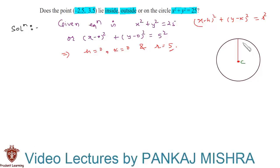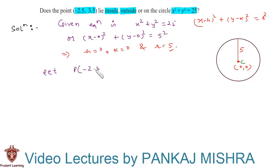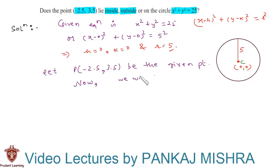So let's assume this is a circle with radius 5 units and coordinates of center (0, 0). Let us call the given point P, so here we have P with coordinates (-2.5, 3.5). Now we will find the distance between the center and this point P, that is CP.